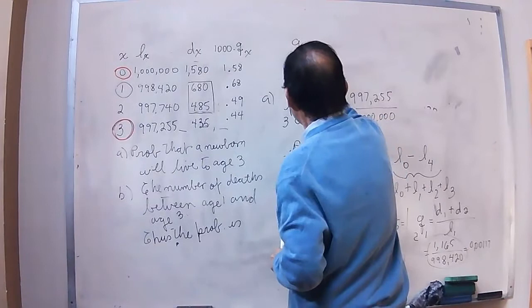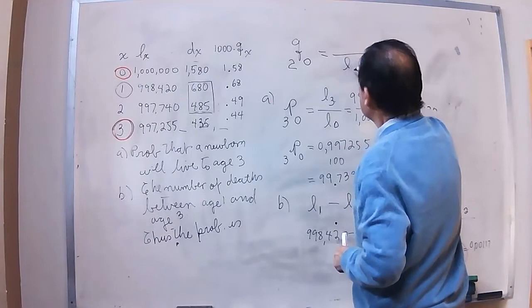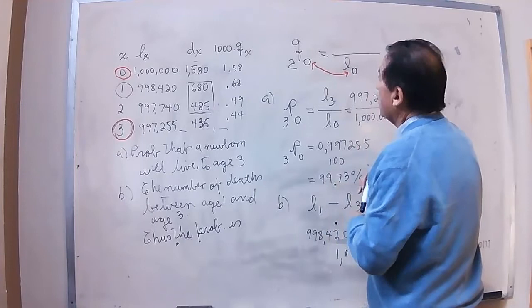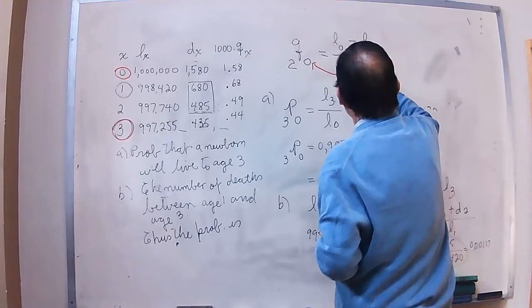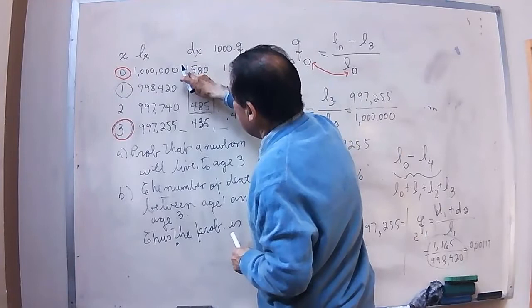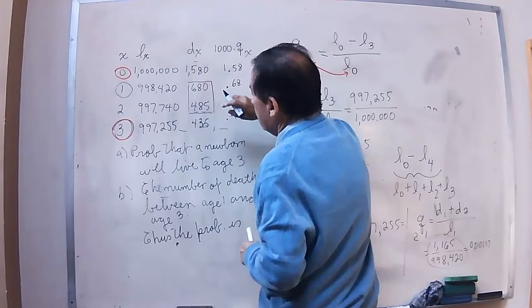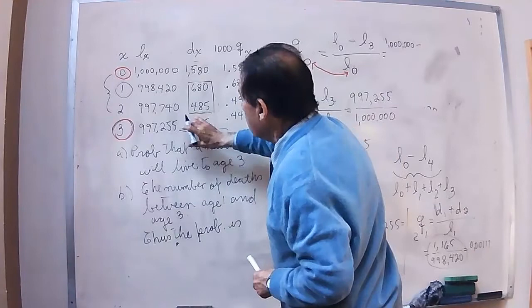Dying considering people at age, newborns at age zero, and dying between the next two years. In this case, the denominator will be the people which are alive at age zero. In other words, the newborns, because we are considering the newborns. But the numerator will be the people which will be alive at age zero, but which is not alive at age three. That means, they are living at age zero, but not living at age three.